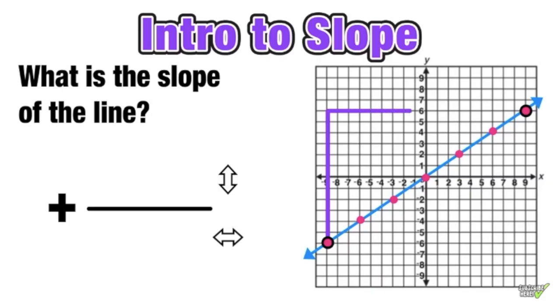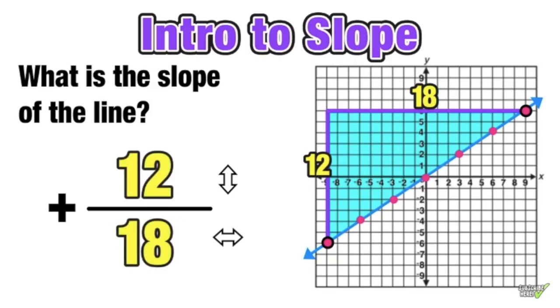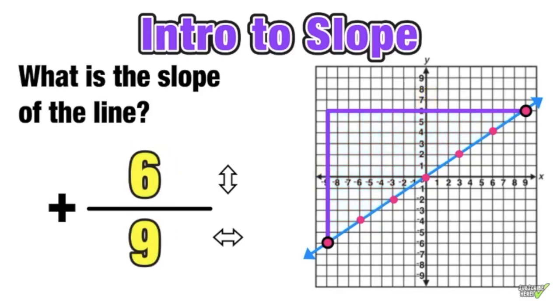We'll start by counting the rise, the number of units that we are increasing, and then the run, the amount of units that we're moving horizontally to make this staircase shape. If we count the number of units upward, we rose 12 and then our run was 18 units to the right.